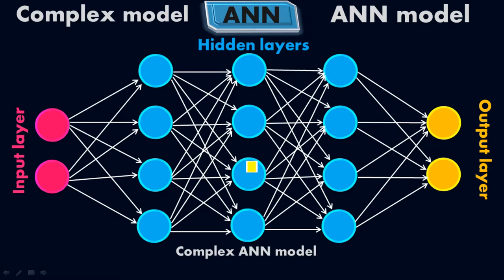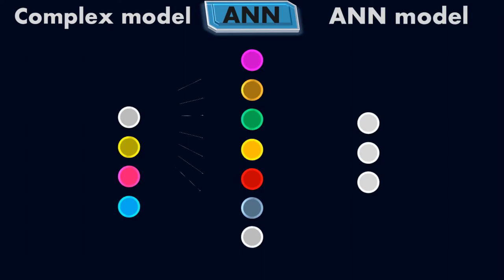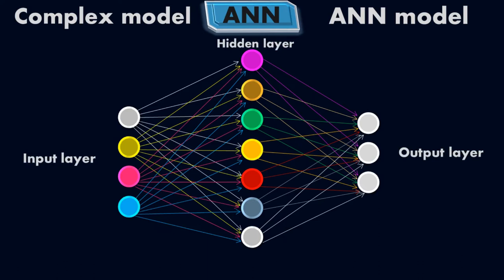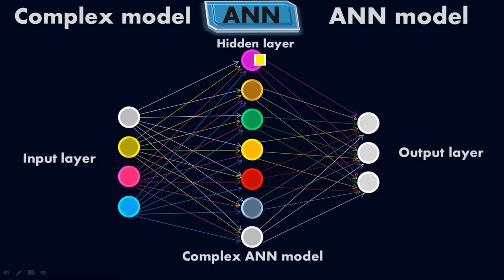Let me go for another complex artificial neural network model — it is a bit more complex compared to the previous one. Here is my input layer, this is my hidden layer, and this is the output layer. This time we have multiple inputs with a single hidden layer and with multiple outputs. In the input layer we have four cells, meaning four inputs. In this single hidden layer I have a total of seven cells, and in the output layer I have three outputs.